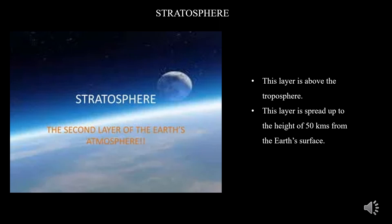Coming to the stratosphere: this layer is above the troposphere and spreads up to a height of 50 kilometers from the earth's surface, with an average extent of 40 kilometers. The temperature remains almost the same in the lower part of this layer up to a height of 20 kilometers. After this, the temperature increases slowly with increase in height. The temperature increases due to the presence of ozone gas in the upper part of this layer. Weather-related incidents do not take place in this layer, and the air blows horizontally here. Therefore, this layer is considered ideal for flying aircraft.